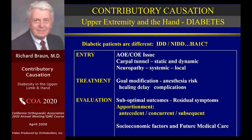Anesthesia risk is important for these patients. Healing delay can be anticipated along with other complications. When the patient reaches maximal medical improvement, we have to accept that we're going to have suboptimal outcomes frequently, and residual symptoms — these must be incorporated into our reports and dissected out for apportionment to non-industrial causation. Furthermore, this is a moving target: we have antecedent, current, and subsequent injuries to consider. Our opinions regarding impairment are always played out on a socioeconomic background, and we must consider future medical care.